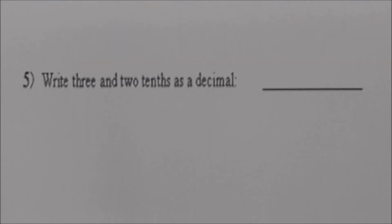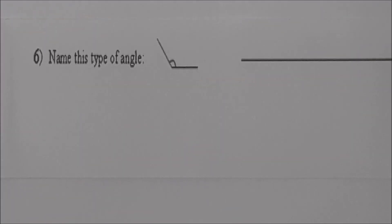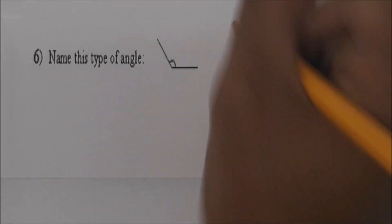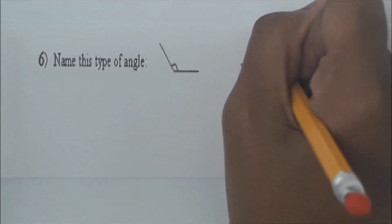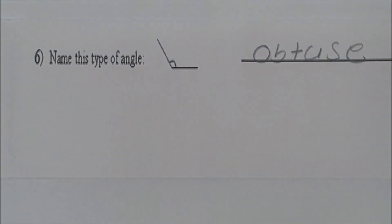Read number 5. Write 3 and 2 tenths as a decimal. We're going to write 3.2. Very good. Read number 6. Name this type of angle. What type of angle is it? An obtuse. What is an obtuse angle? An obtuse angle is greater than 90 but less than 180. Write the name there for me. Very good.